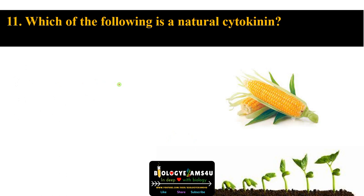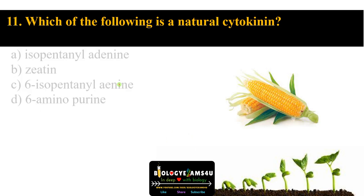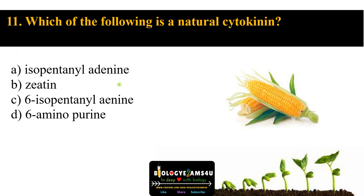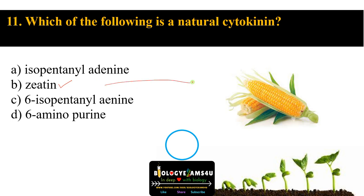Question number eleven: which of the following is a natural cytokinin? Options are isopentanyl adenine, zeatin, 6-isopentanyl adenine, 6-aminopurine. The answer is zeatin. Zeatin is a natural cytokinin derived from maize. As we know, cytokinin is an adenine derivative.